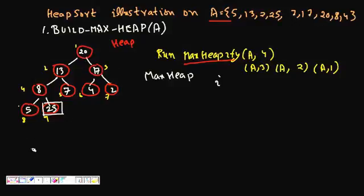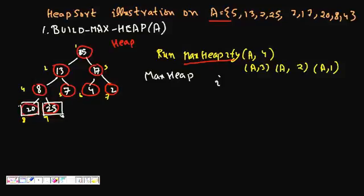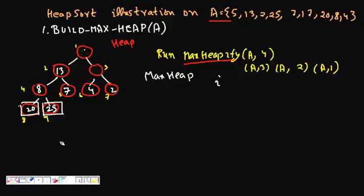We swap 5 and 20: 5 comes to the top and 20 is placed at position 8, now out of the heap. The heap size is decremented. Since 5 is not satisfying Max Heap property, we call Max Heapify a[1]. 5 is less than 13 and 17, so we swap 5 and 17. Then 5 is greater than 4 and 2, so no further swap is needed. Now it is a Max Heap again.